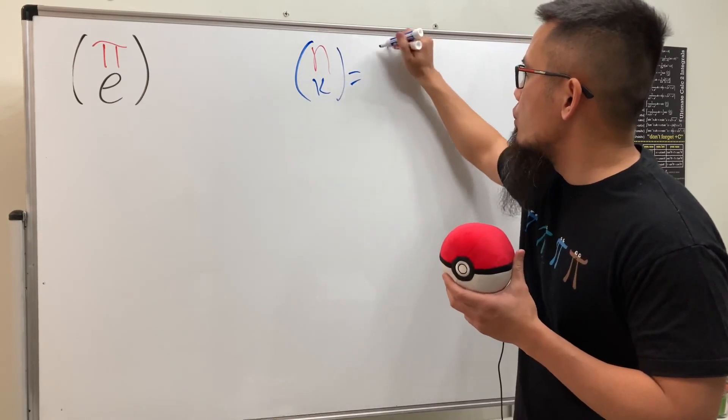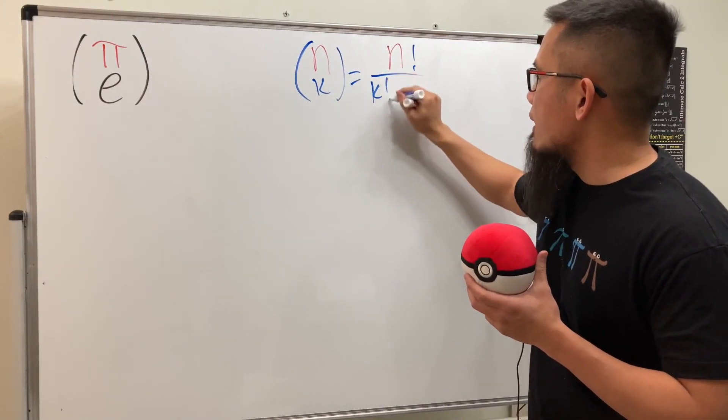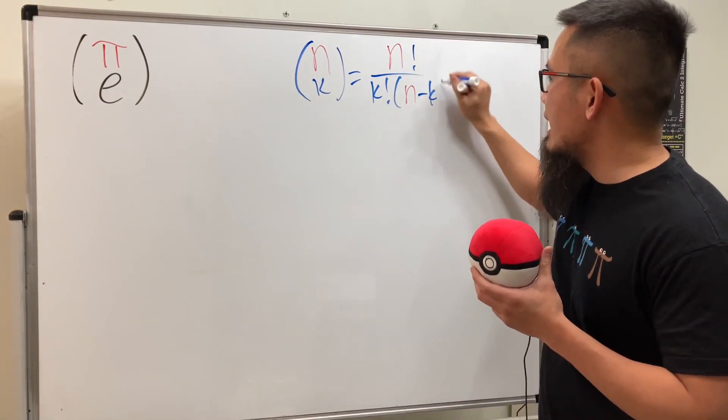When we have n choose k, this is equal to n factorial divided by k factorial times (n minus k) factorial.